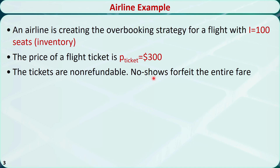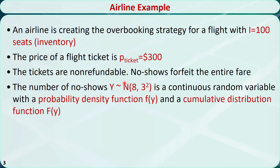Those customers who fail to check in on time are referred to as no-shows — it could be they are late, or their plans have changed. Based on historical data, the number of no-shows Y is a random variable and it follows a normal distribution with mean 8 and standard deviation 3. So the average no-show rate is about 8%, because the total capacity is 100 seats.